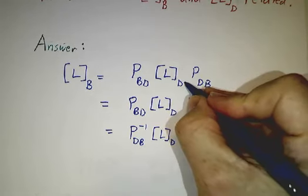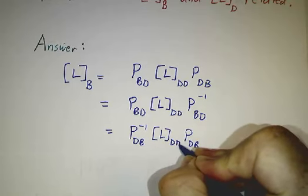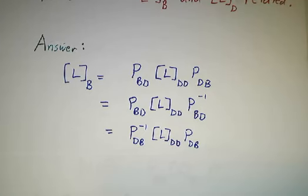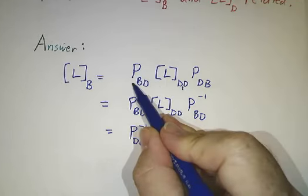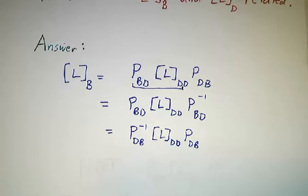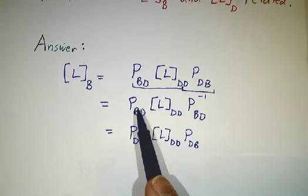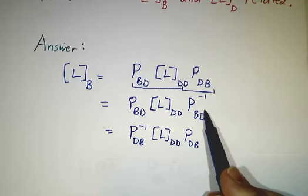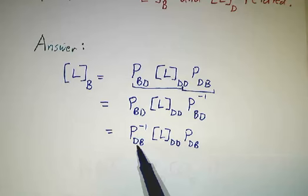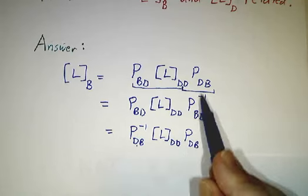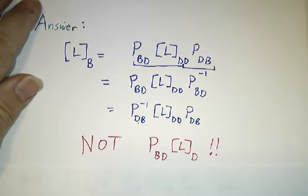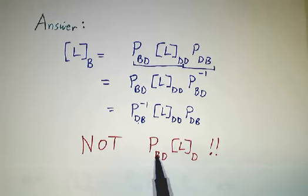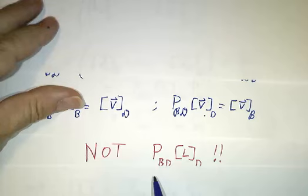The answer is that you need to multiply by the change of basis matrix on both sides. The way to remember that is that L sub d is really a shorthand for L dd — the input basis is d and the output basis is d. You need a change of basis on one side having to do with the output basis, and a change of basis on the other side having to do with the input basis. The most common mistake is that people write down a formula that looks just like the formula for change of basis for vectors, but it's wrong.